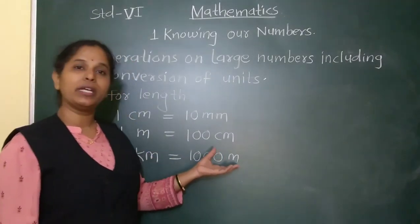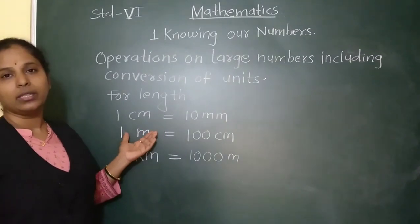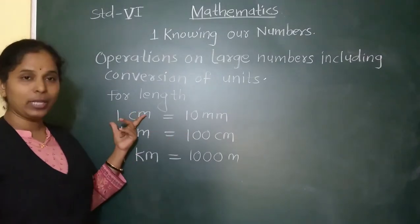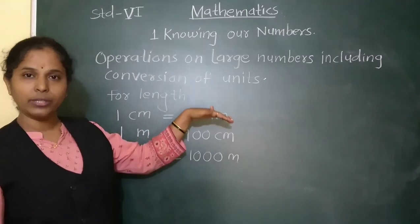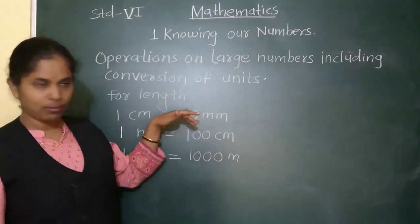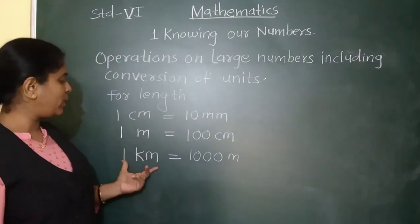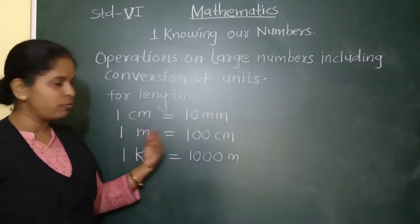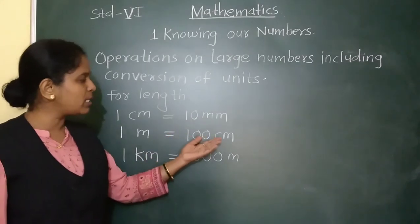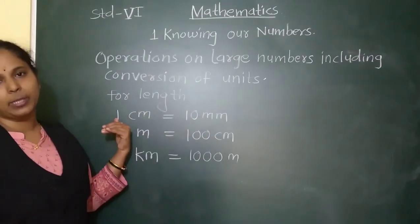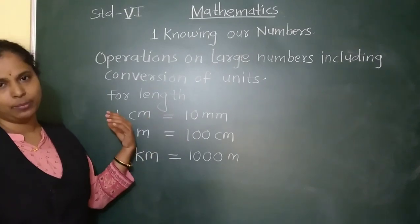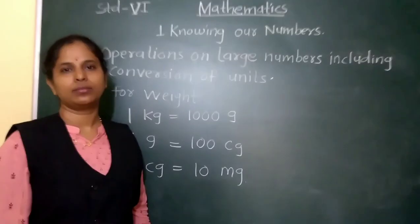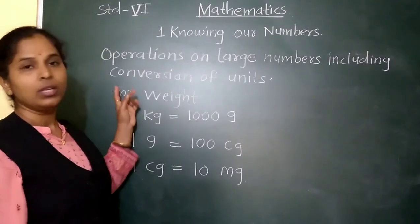If metres are given, we can convert into centimetres by multiplying by 100. If centimetres are given, we can convert into millimetres by multiplying by 10. Kilometres can be converted into metres by multiplying by 1000. Similarly, the opposite can also be done — from metre to kilometre, centimetre to metre, millimetre to centimetre — but this time we have to divide. In this way, we can do the conversion of units for length.